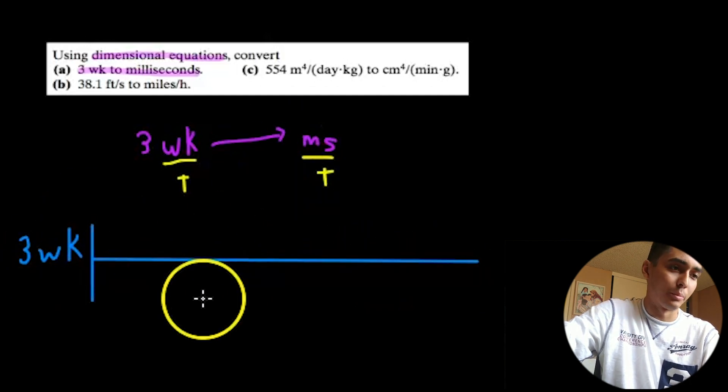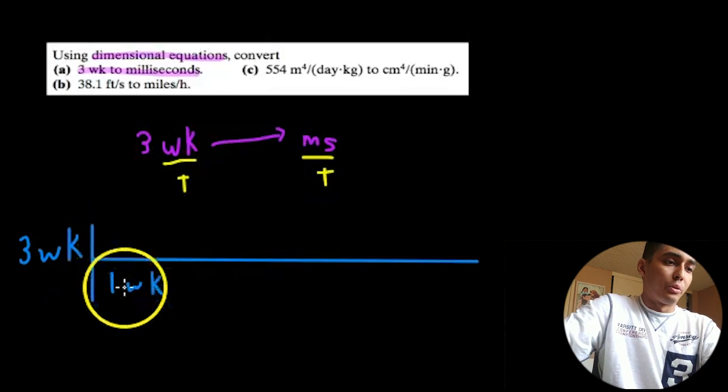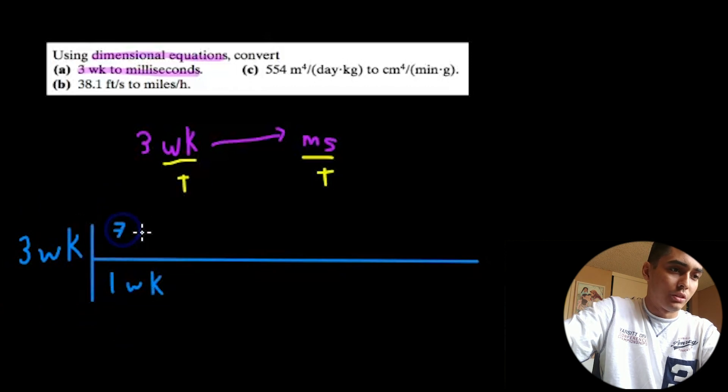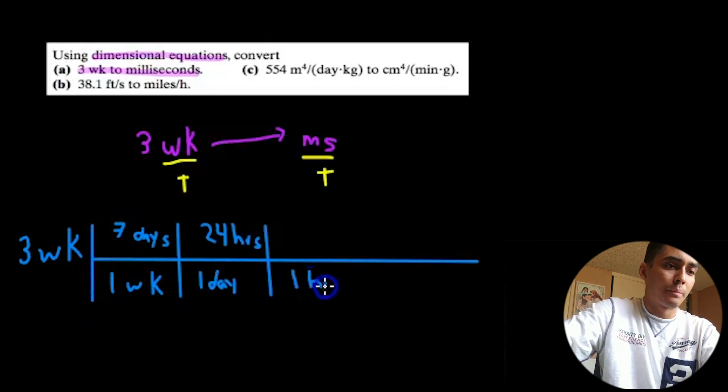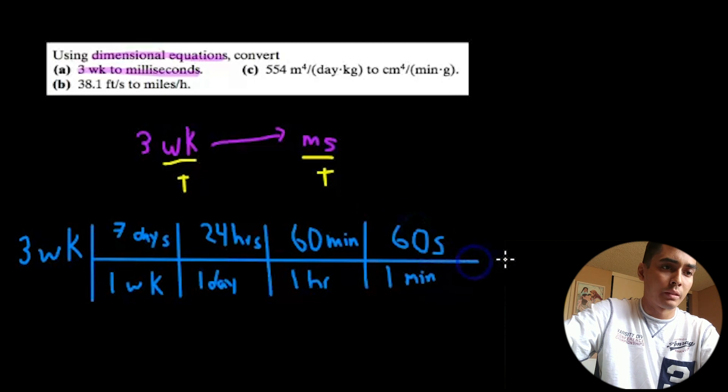And we're going to cancel out weeks to get milliseconds. So hopefully this is a review, but just to make sure. So we have three weeks converting from one week is what? Seven days, of course. And one day is 24 hours. In one hour, there are 60 minutes. And in one minute, there are 60 seconds.